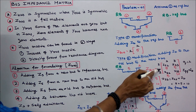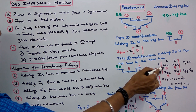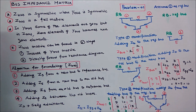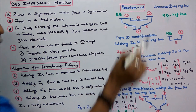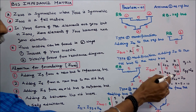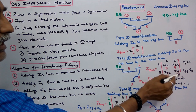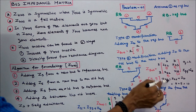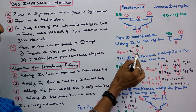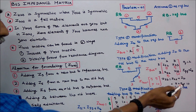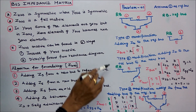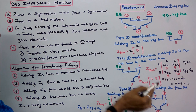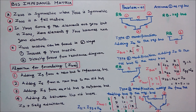Z bus is equal to [Z22, Z23; Z32, Z33]. Here Q is equal to 2. Z33 is equal to ZQQ plus ZB, that is Z22 plus ZB, which is 5 plus 5, equal to 10. Therefore, in Type 2 modification, Z bus is equal to [5, 5; 5, 10]. This is the Type 2 modification.